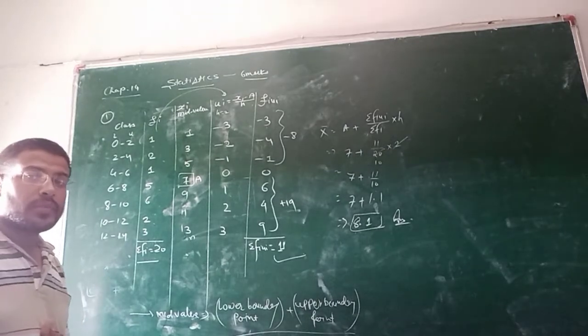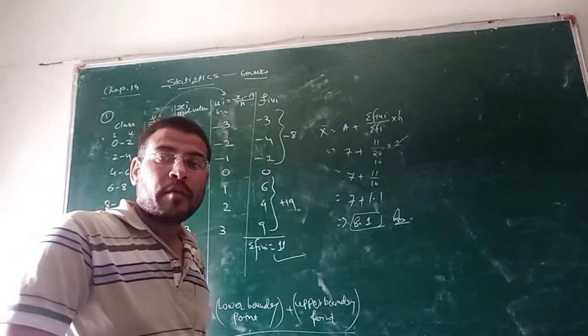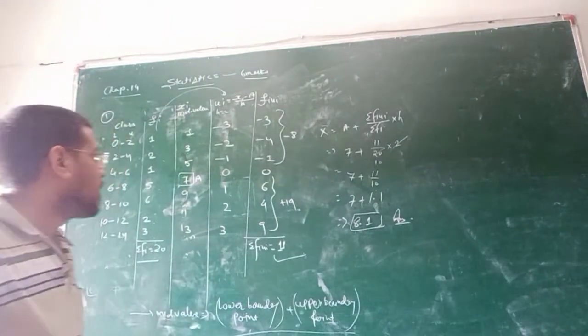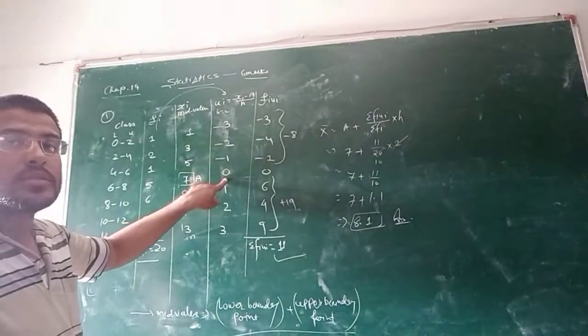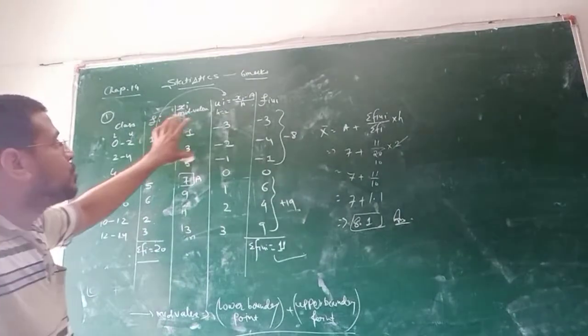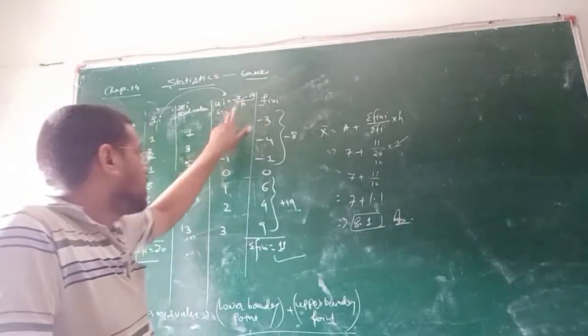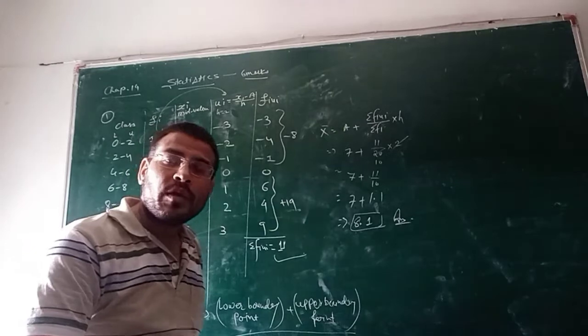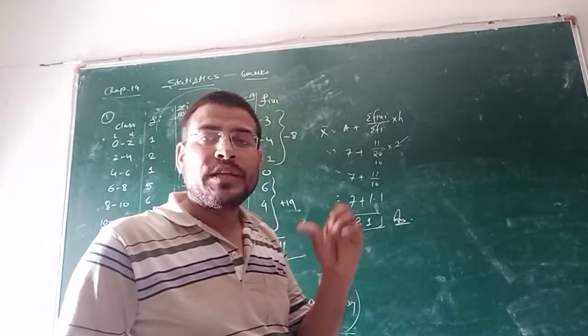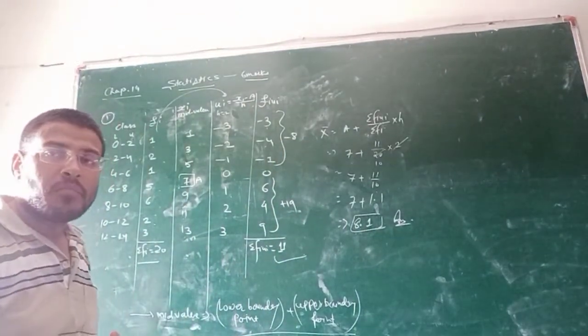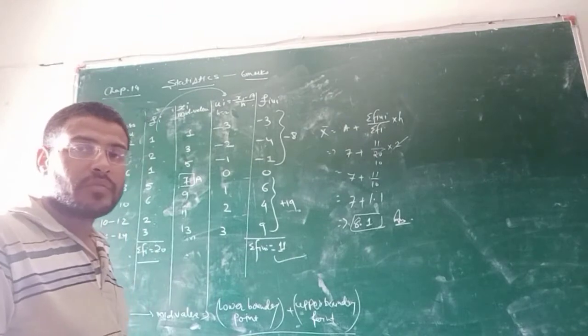Now, ui is to be calculated. For ui, your formula is xi minus a, a for assumed mean, divided by h, the common difference. Here, we have assumed a is equal to 7, put 0 in the other column, and by using this ui equals xi minus a upon h, you will get minus 1, minus 2, and minus 3. Normally, in 10th standard, teachers explain to you that just put minus 1, 2, and 3 on the upper side and lower side 1, 2, and 3. But you should know from where this minus 1, 2, and plus 1, 2, and 3 is coming from.